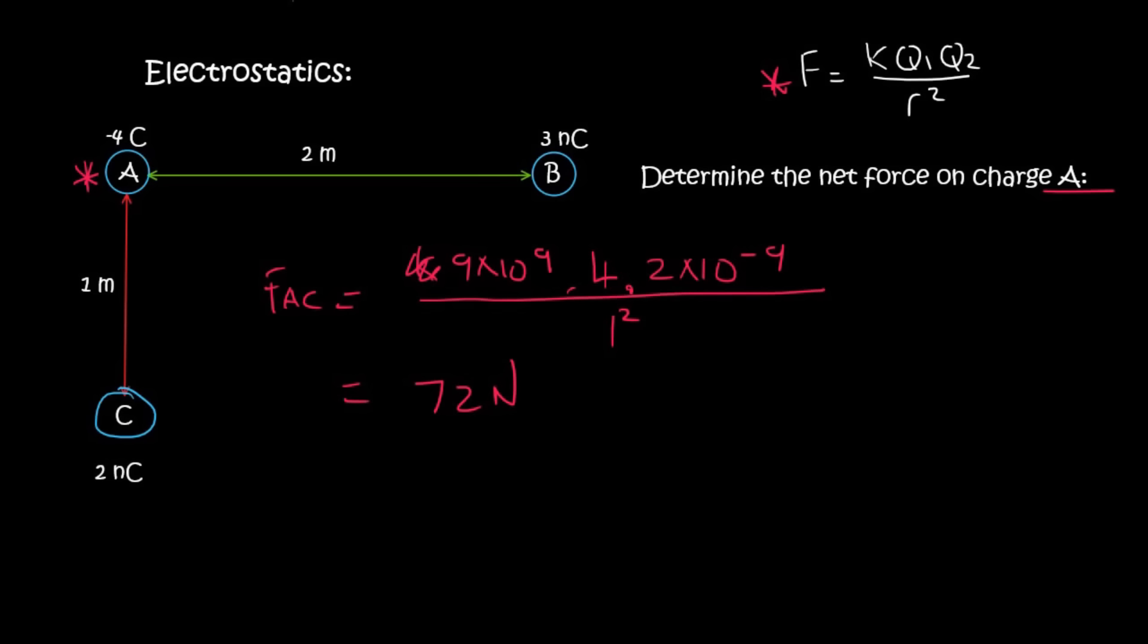That'll give you 72 newtons. Now A is negative. C is positive. So they will attract each other. So they'll move towards each other. But we are interested in A. And so A will move down.